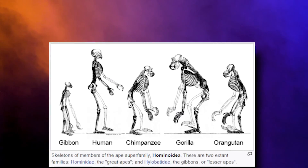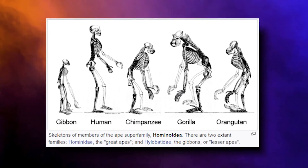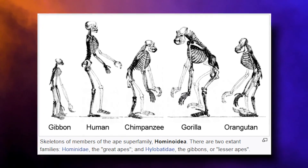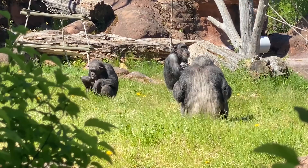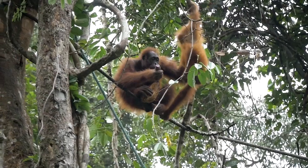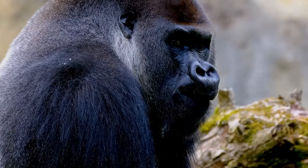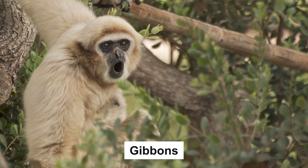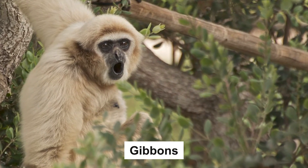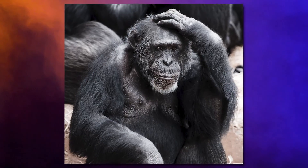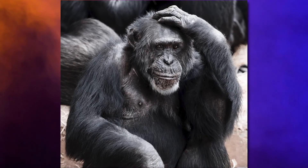Within the superfamily hominoidea is the family hominidae, which are colloquially known as the great apes. The great apes include chimpanzees, bonobos, orangutans, gorillas, and humans. The lesser apes, gibbons, belong to the family hylobatidae. Apes are distinct from other primates in a vast number of ways.